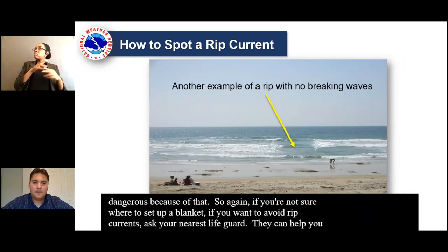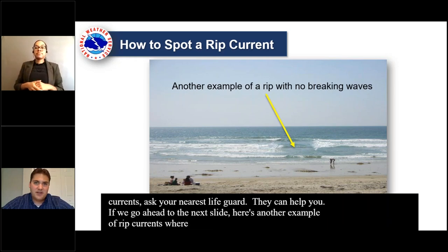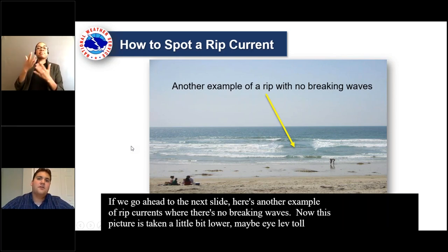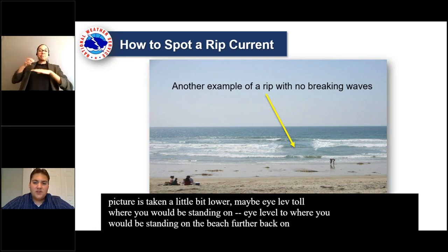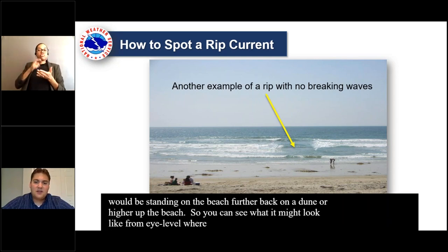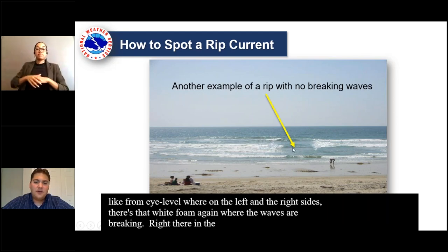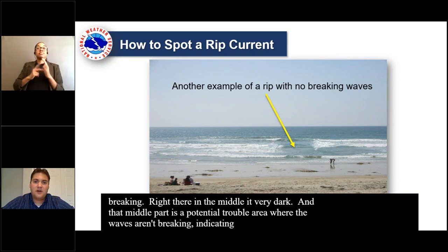Here's another example of rip currents with no breaking waves. This picture is taken at about eye level to where you'd be standing back on the beach or higher up. You can see what it might look like from eye level — on the left and right sides there's white foam where the waves are breaking, but right there in the middle it's very dark. That middle part is a potential trouble area where the waves aren't breaking, indicating water rushing there — a rip current, very dangerous.